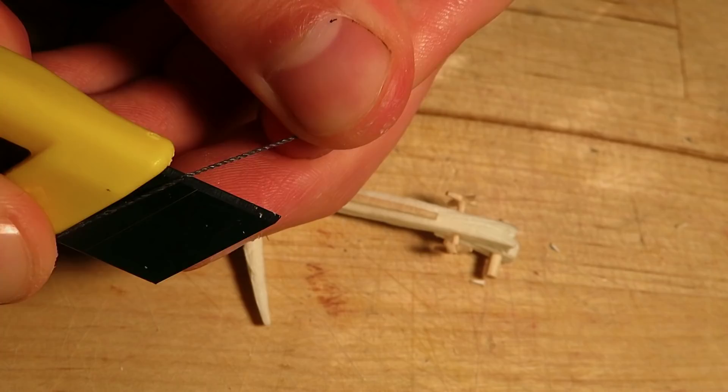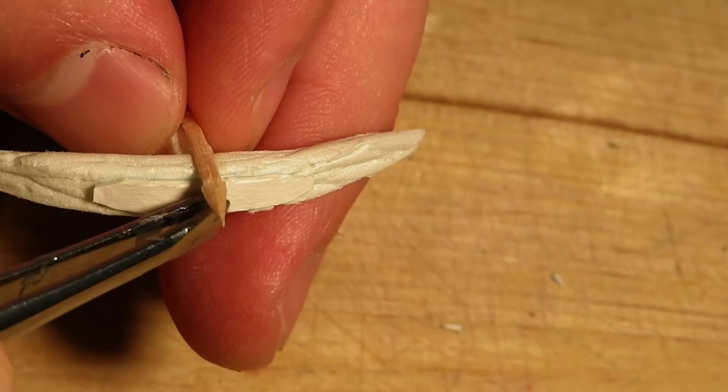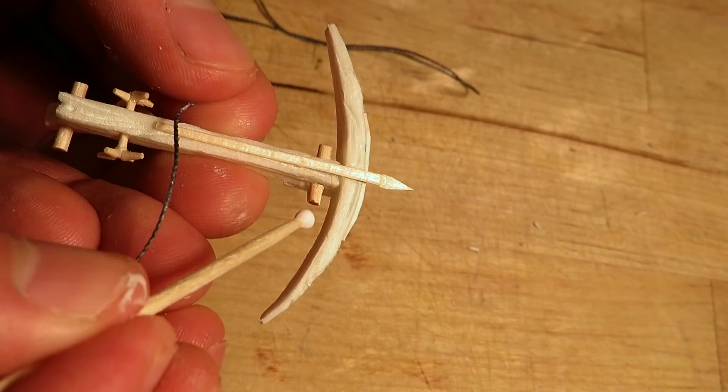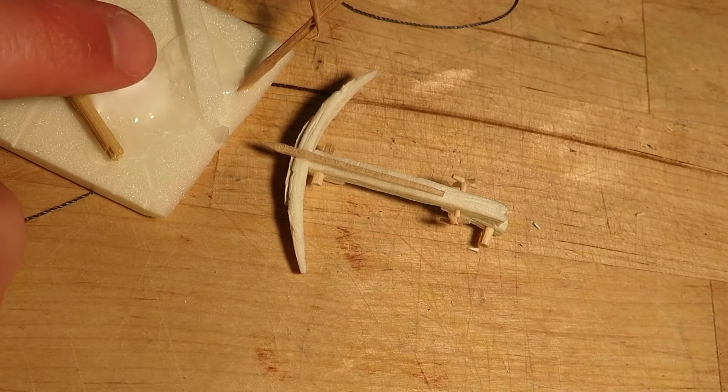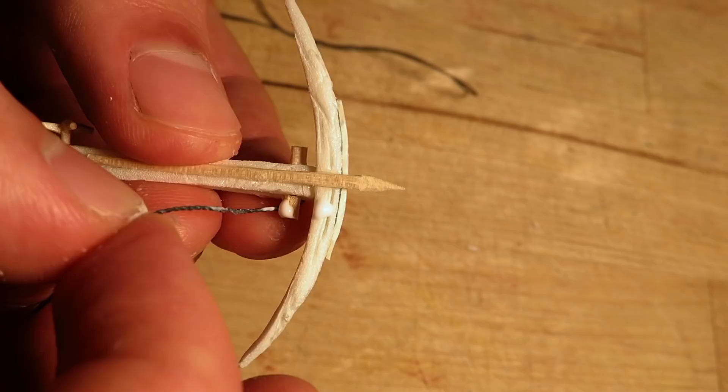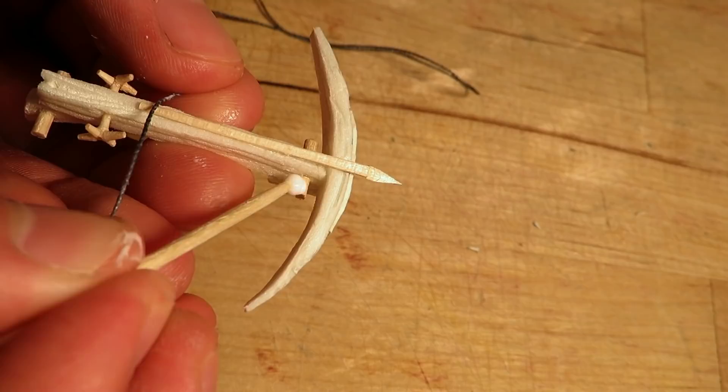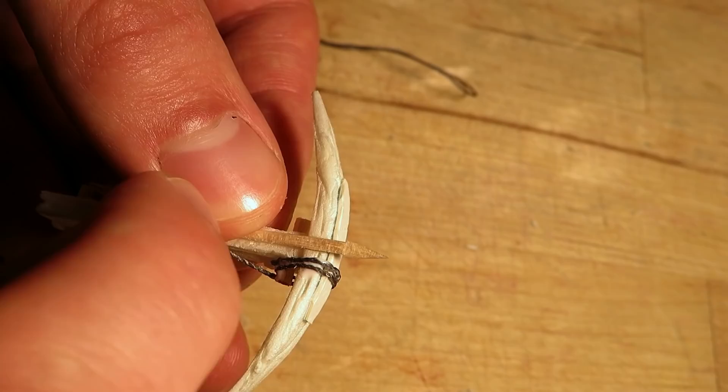And time for the string. I used braided fishing line that I coated in PVA glue to make it stiffer. I wrapped it around the bow and the short sticks I glued in earlier. With the help of some glue the string stayed well in its place.